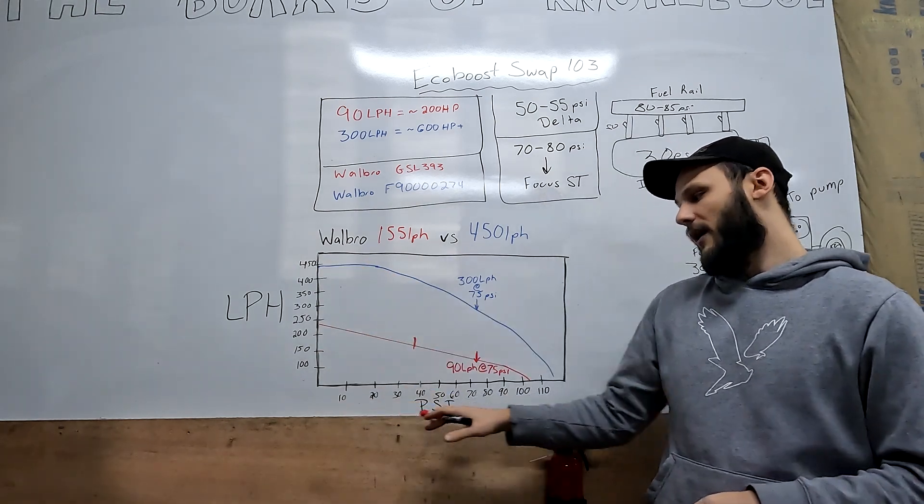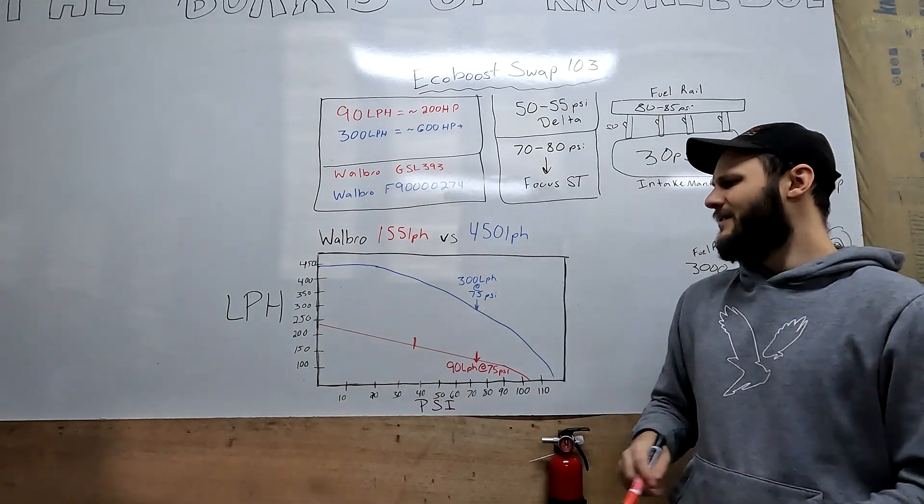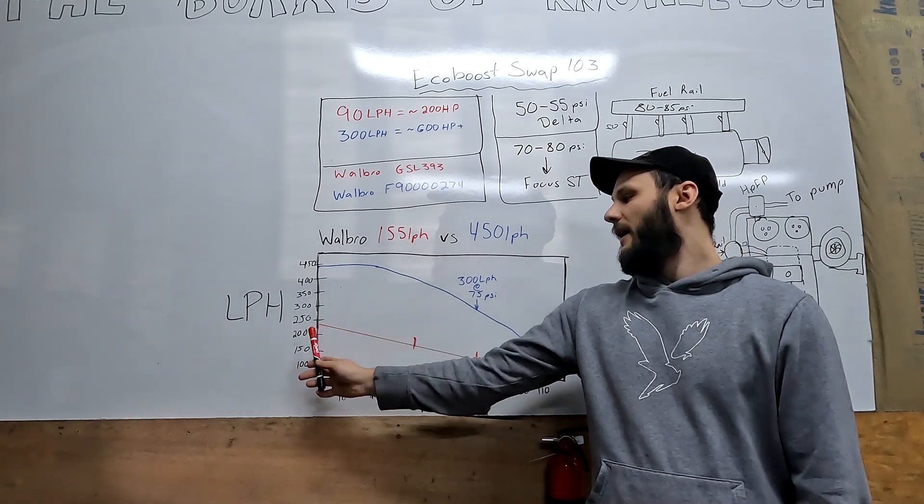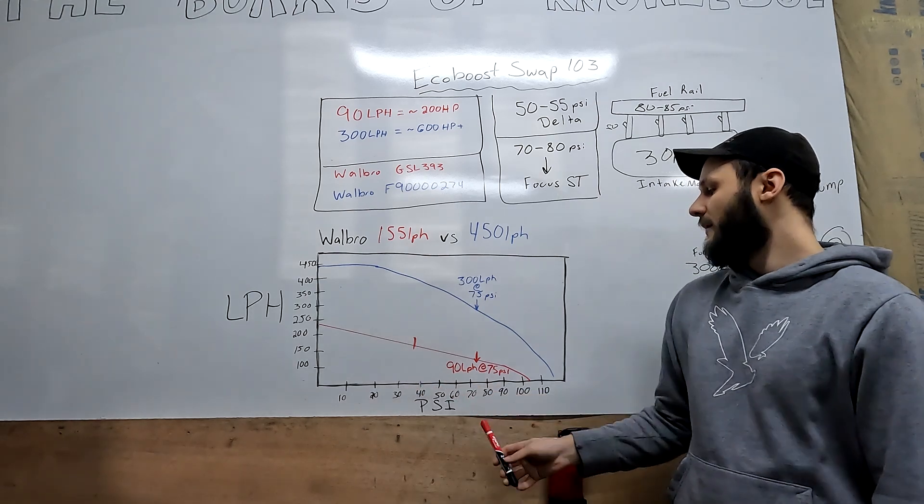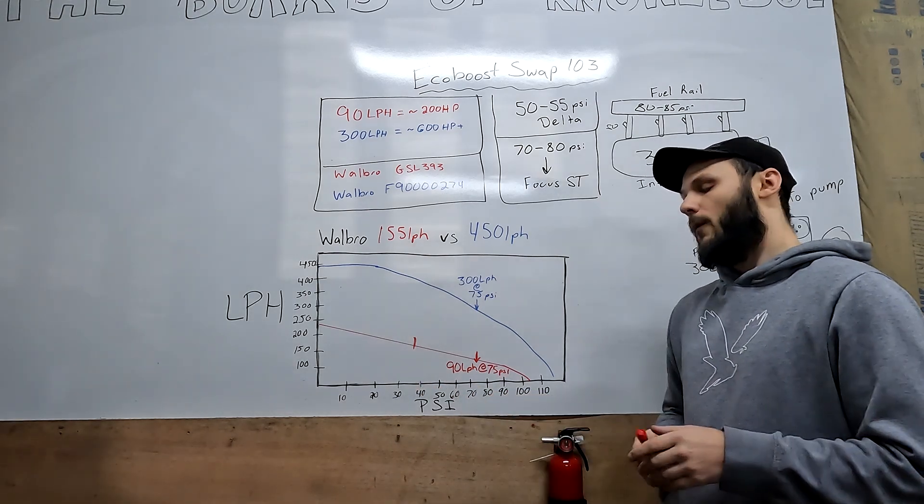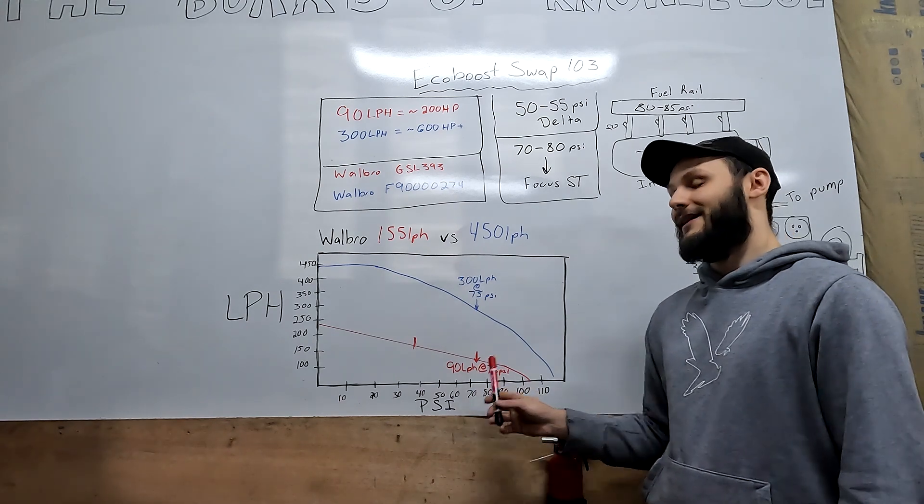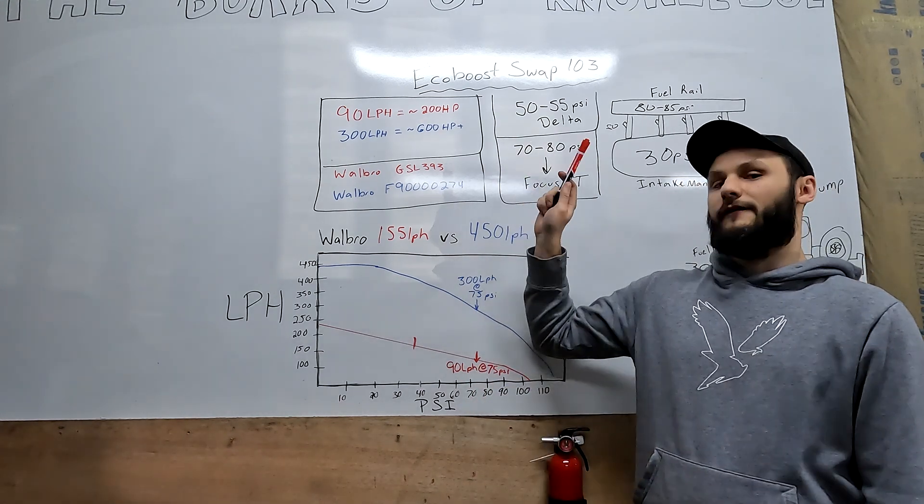On our side here we have our liter per hour flow rate, and on the bottom here we have our pressure. As you can see with a 155 liter per hour pump, as the fuel pressure increases, our flow rate actually drops. And at 75 psi where we want the pressure to be, this pump's only flowing 90 liters per hour, and that's only good enough for 200 horsepower worth of fuel.